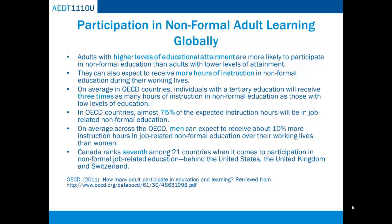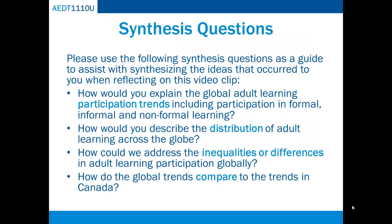Finally, according to the OECD, Canada ranks 7th among 21 countries when it comes to participation in non-formal job-related education, behind the United States, the United Kingdom, and Switzerland. Please reflect on the following synthesis questions: How would you explain the global adult learning participation trends including participation in formal, informal, and non-formal learning? How would you describe the distribution of adult learning across the globe? How could we address the inequalities or differences in adult learning participation globally? And how do the global trends compare to the trends in Canada?